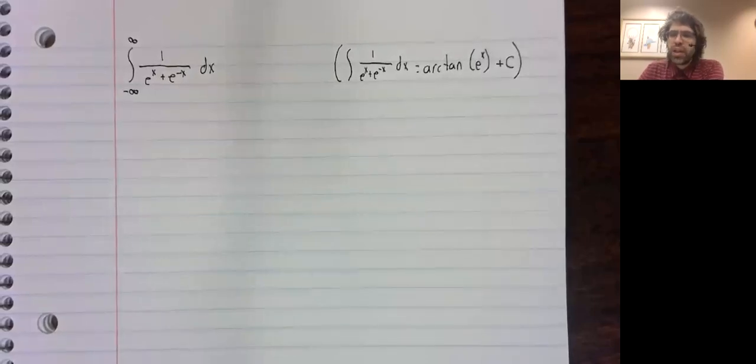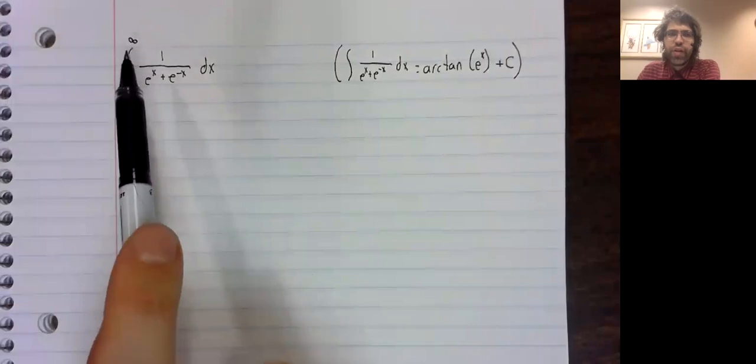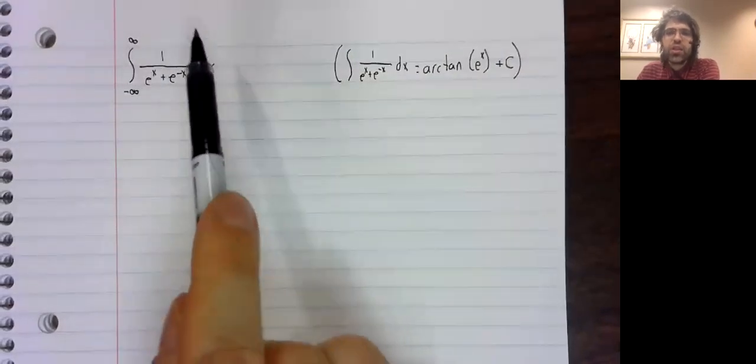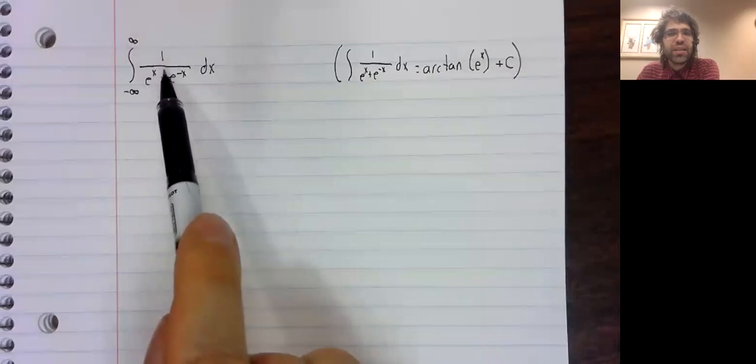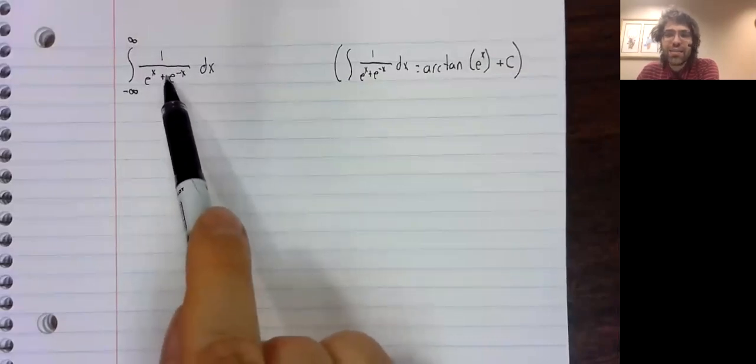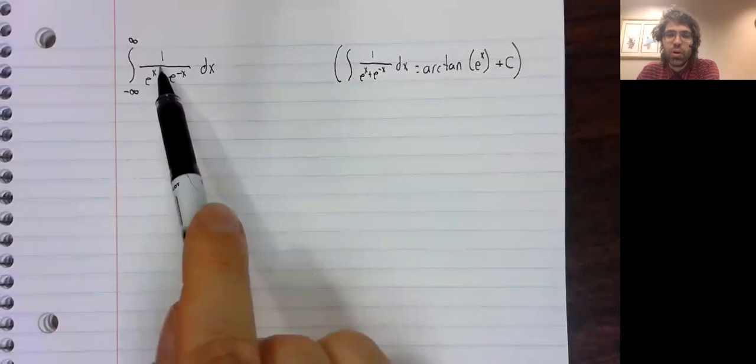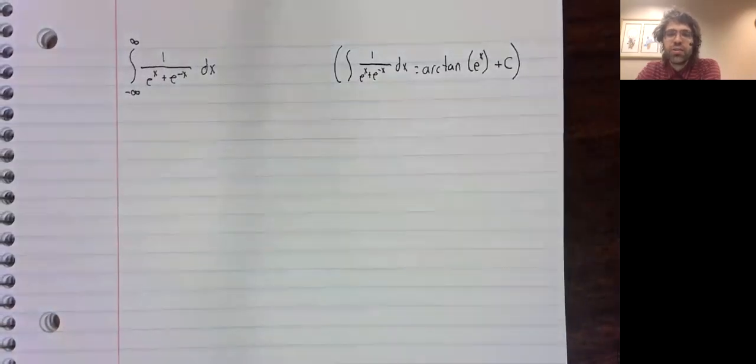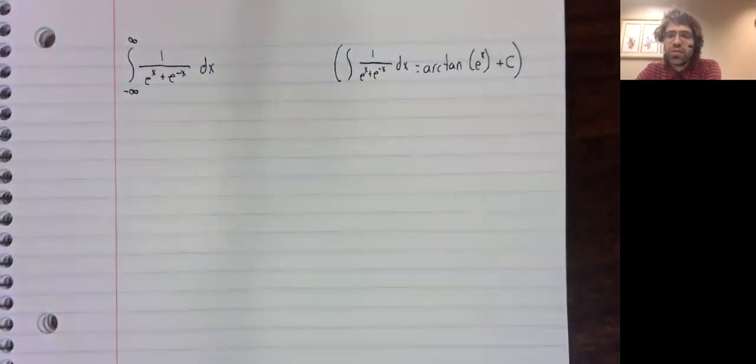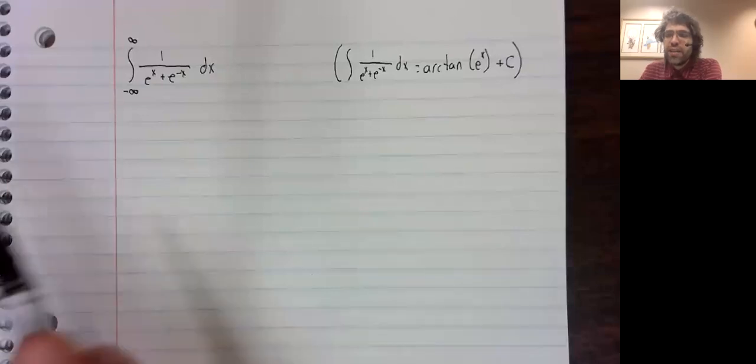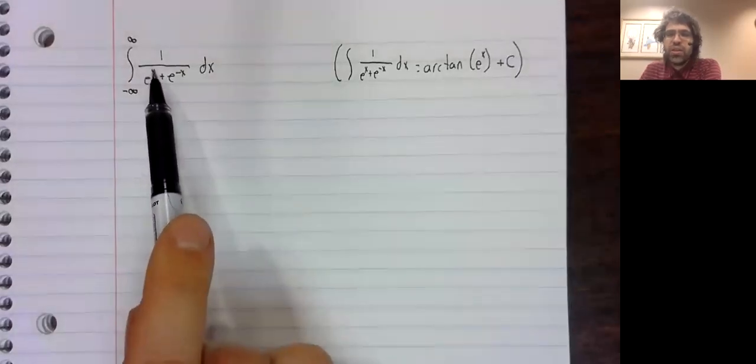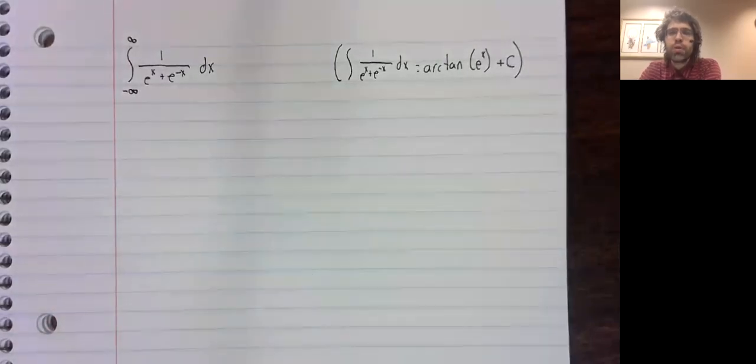According to our definition, to find this and indeed to determine whether this exists, we might not get an answer from all of this, it might end up diverging. But to determine convergence or divergence and to figure out what the integral is if it converges, we should break this up into two improper integrals.